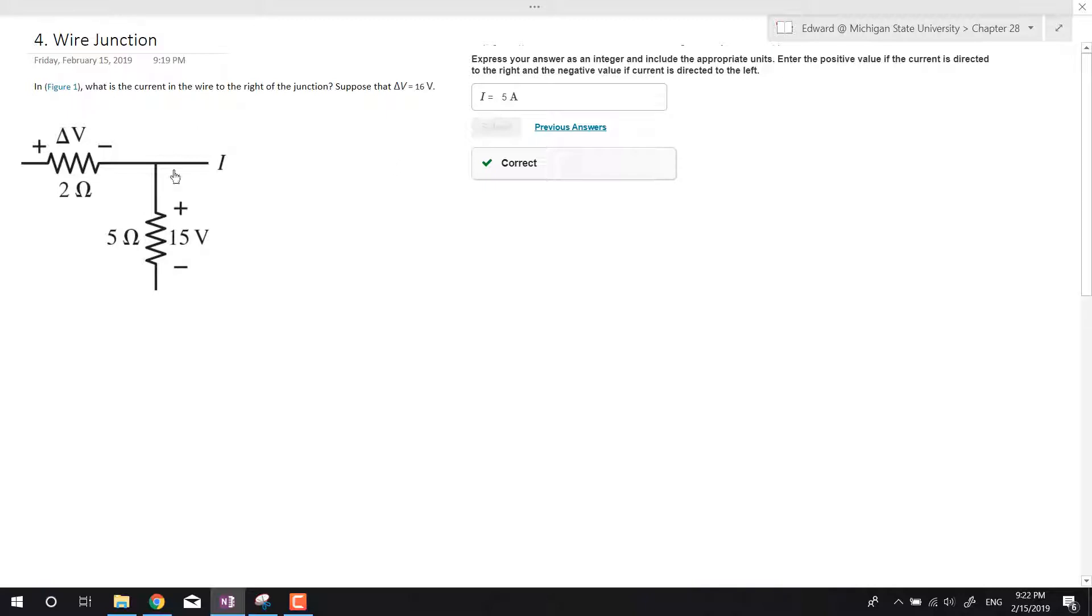We're asked in figure one right here, what is the current of the wire to the right of the junction? So we're trying to find I right here. And we're given that this change in V is equal to 16 volts.